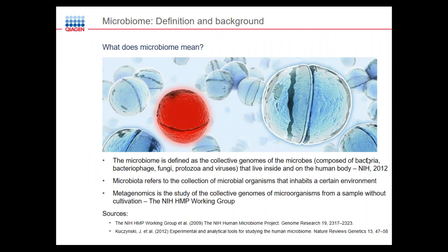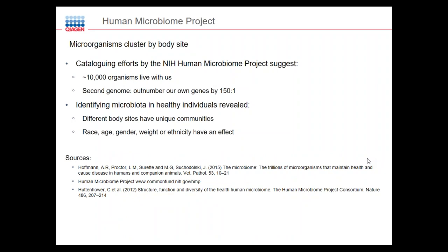The microbiome is defined as the collective genomes of microbes — mostly thought of as bacteria, but also including phage, fungi, protozoa, and viruses that live inside and on the human body, as well as in the environment. The microbiota refers to a collection of microbial organisms, and metagenomics is the study of their collective genomes. One of the earliest and largest projects was the Human Microbiome Project, cataloging all the different organisms that live on humans. They found over 10,000 organisms live on and within us, with the large majority in our intestinal tract, where microbial genes outnumber our own genes by greater than 150 to 1.